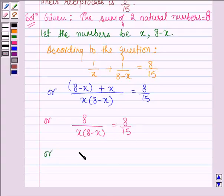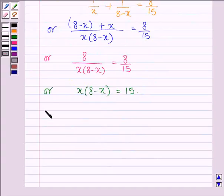Or on cross multiplying, we have x(8-x) equals 15, which further implies that x² - 8x + 15 = 0.